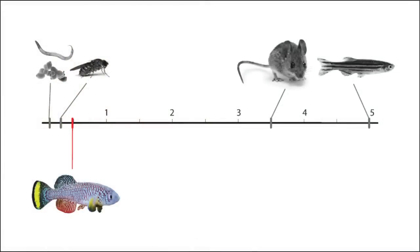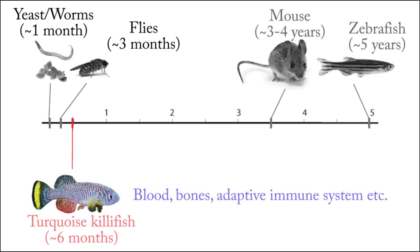So what we feel is that this African turquoise killifish fits this perfect niche where it's as short-lived as the invertebrates like yeast, worms, and flies. But because it's a vertebrate, it does have the key organs and tissues that are very important for human aging.